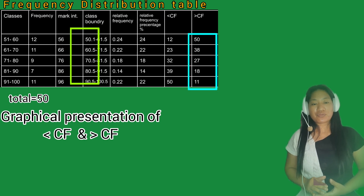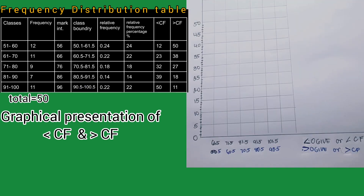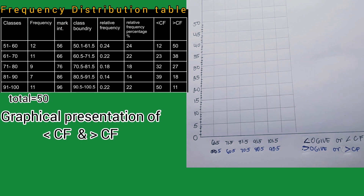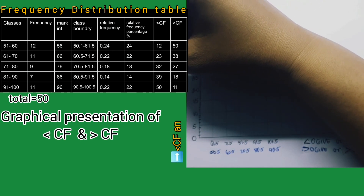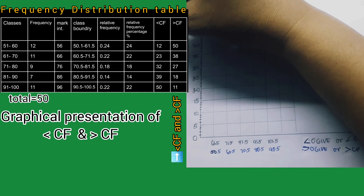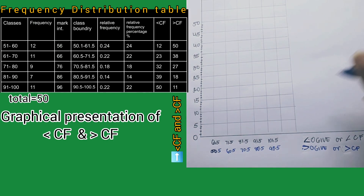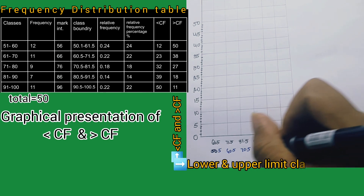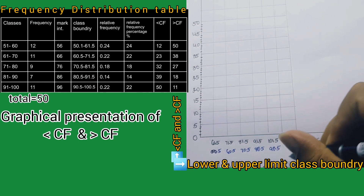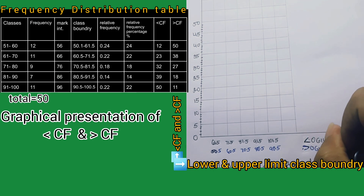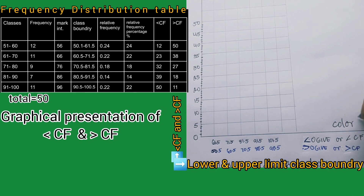The right shift cumulative frequency is the vice versa — we need the right shift cumulative frequency numbers corresponding to the lower boundary in the frequency distribution table. Here is the prepared example graph: the vertical line represents the left shift and right shift cumulative frequency, while the horizontal line represents the lower and upper limit of the class boundary. The color legend is: black is for left shift cumulative frequency, and blue is for right shift cumulative frequency.